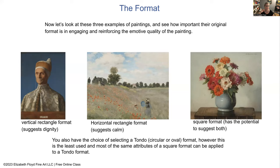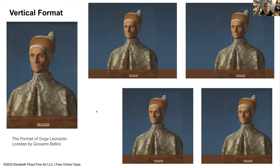I'd also be remiss if I didn't mention that you also have the choice of a tondo — a circular or oval shaped format. That shape is not often used, but design-wise a circular tondo, because it has no corners, shares many of the same attributes as a squarish format. The only difference is you'll never have corners to create interesting negative space shapes.